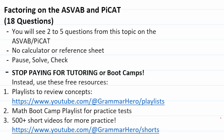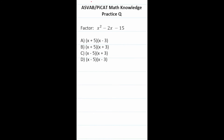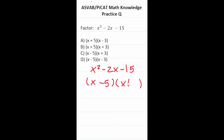Let's go ahead and get started. This ASVAB PiCat math knowledge practice test question says: factor x squared minus 2x minus 15. This is a quadratic with a leading coefficient of 1, so if we can factor it, it's going to look like (x )(x ). We're looking for two numbers that multiply to negative 15 but add to negative 2. That's minus 5 and plus 3. So this one is answer choice C.